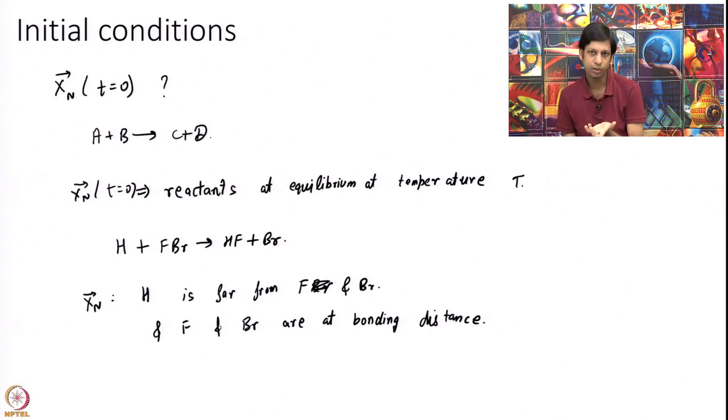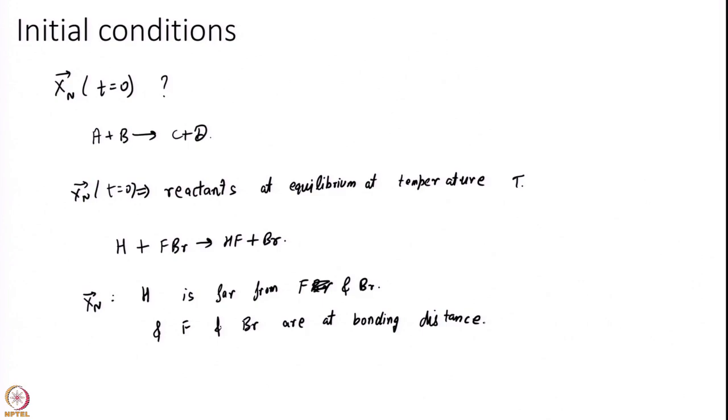I can try to find out what the equilibrium distance of FBr molecule is, whatever number of angstroms, and I can think of placing F and Br that distance away and I think of H being very far away. That is my initial condition for this particular problem. For every problem therefore, the initial condition is going to be different and that is where you have to use your intuition. Modern day programs actually help you.